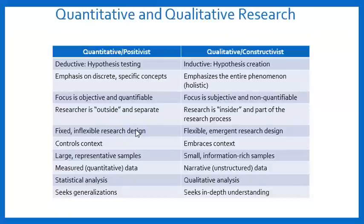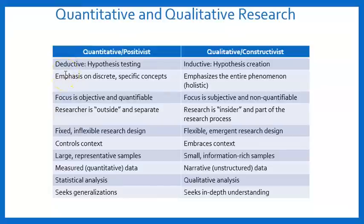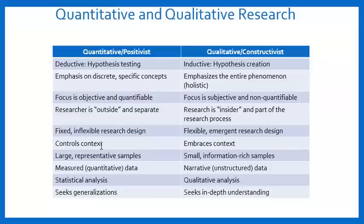Here's a quick table to sum up everything so far. Quantitative falls under the positivist umbrella and qualitative falls under the constructivist umbrella. Quantitative is deductive — start with a hypothesis and test it. Qualitative is inductive — start with participants and their data and develop a hypothesis. Quantitative is very objective, structured, and fixed with non-flexible designs. Qualitative is subjective with emergent, flexible designs. Qualitative embraces the context in which the person lives, while quantitative tries to control that context to find cause and effect.